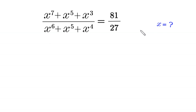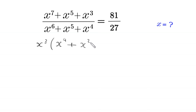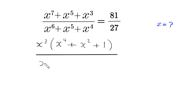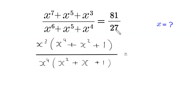Let's start from the numerator. We can factor out x cubed as a common factor, leaving x to the power 4 plus x squared plus 1 in the bracket. From the denominator, we can factor out x to the power 4 as a common factor, leaving x squared plus x plus 1 in the bracket.